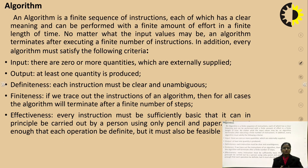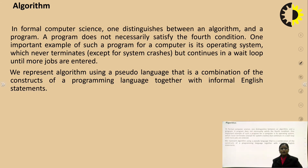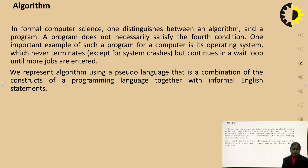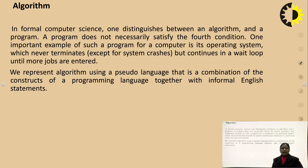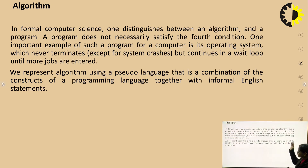It must be implementable with pen and paper. In formal computer science, one distinguishes between an algorithm and a program. A program does not necessarily satisfy the fourth condition — that is finiteness. This is the basic difference between an algorithm and a program.